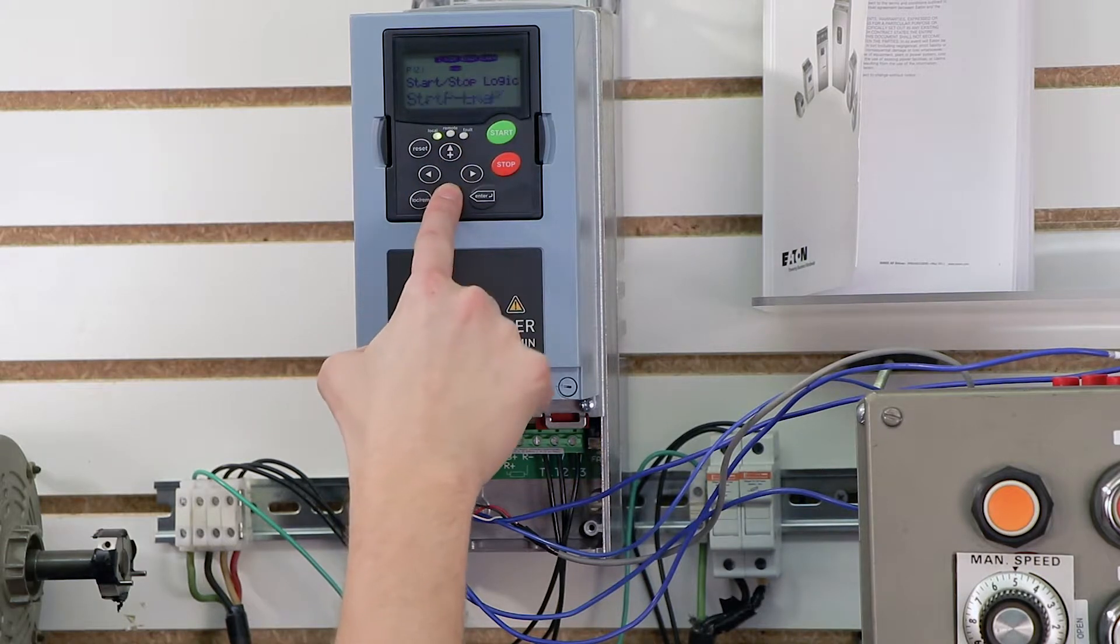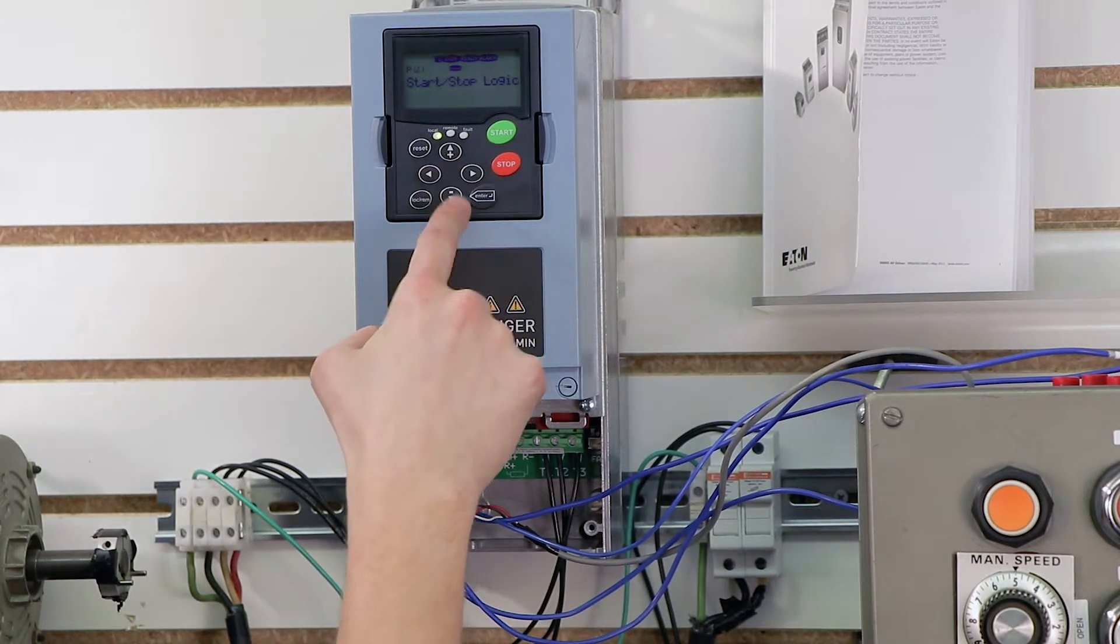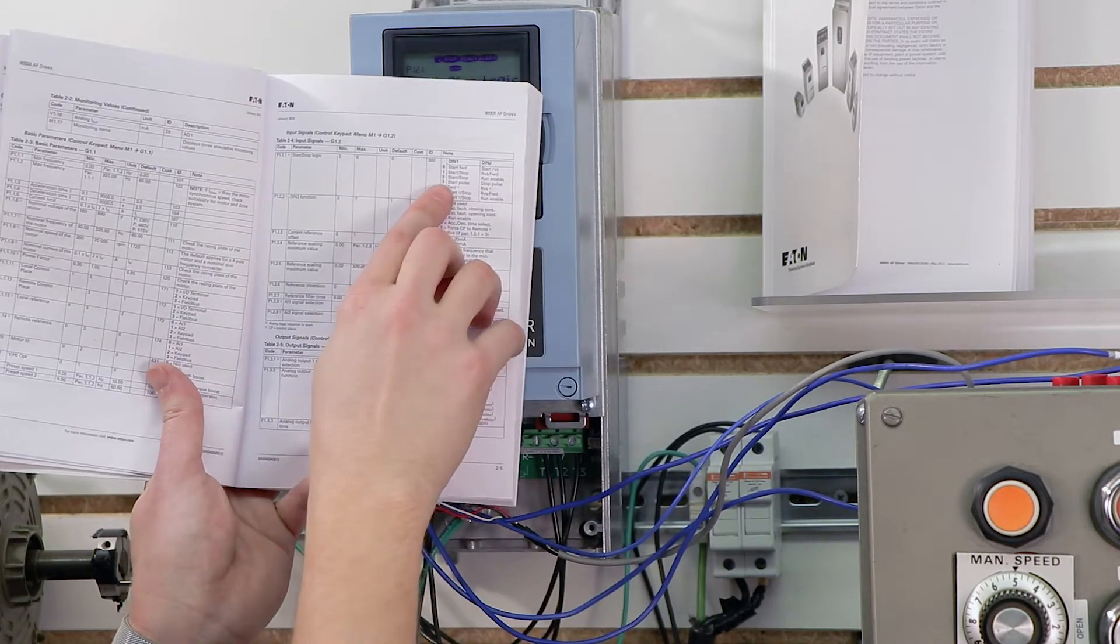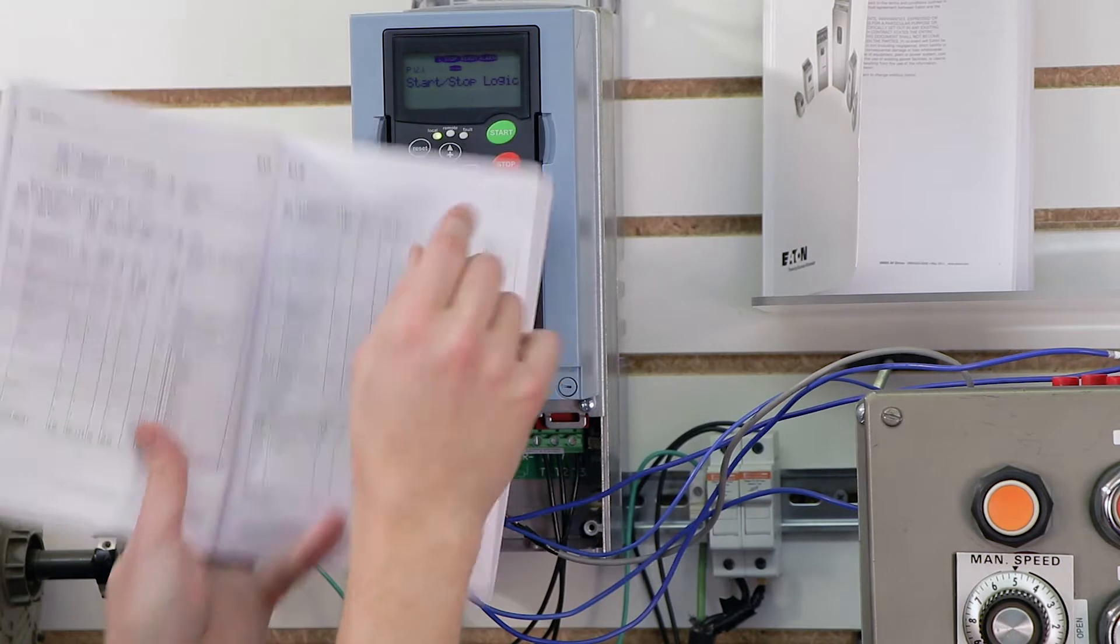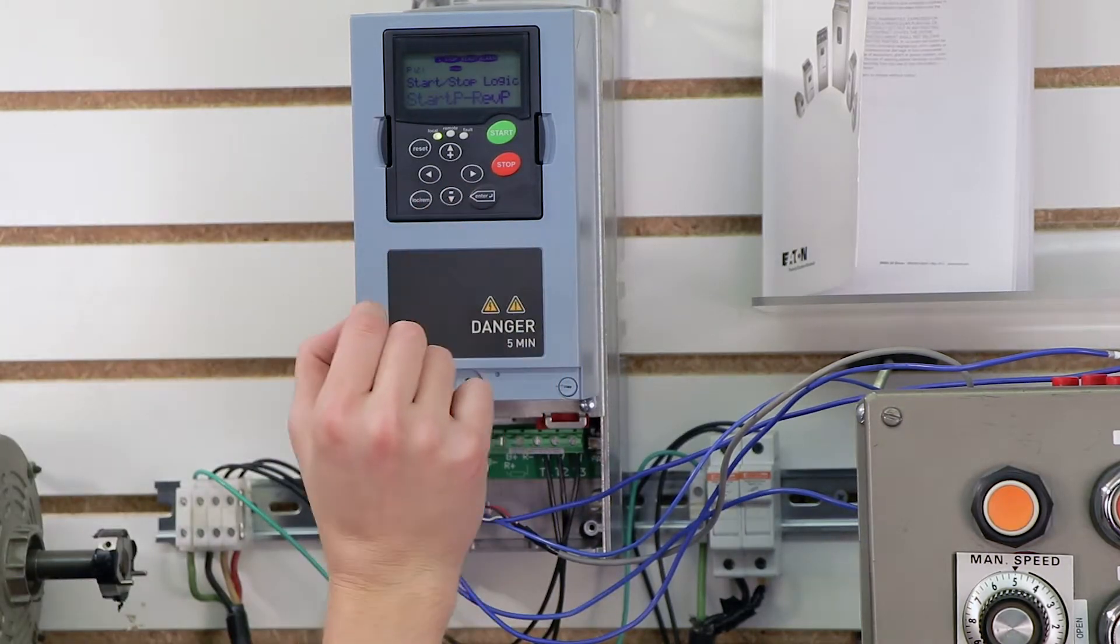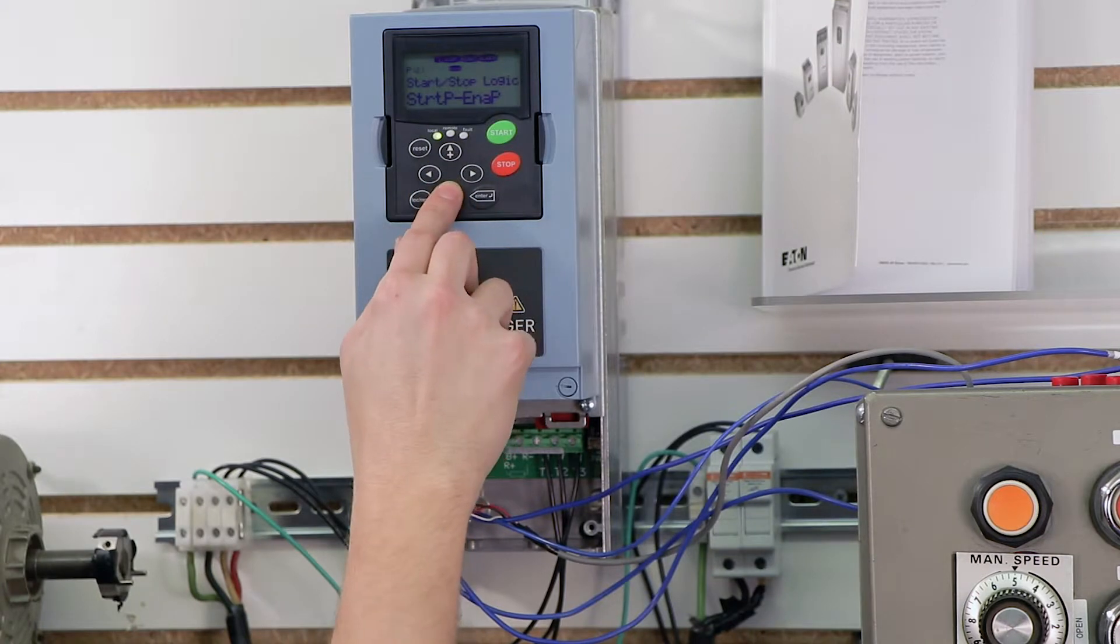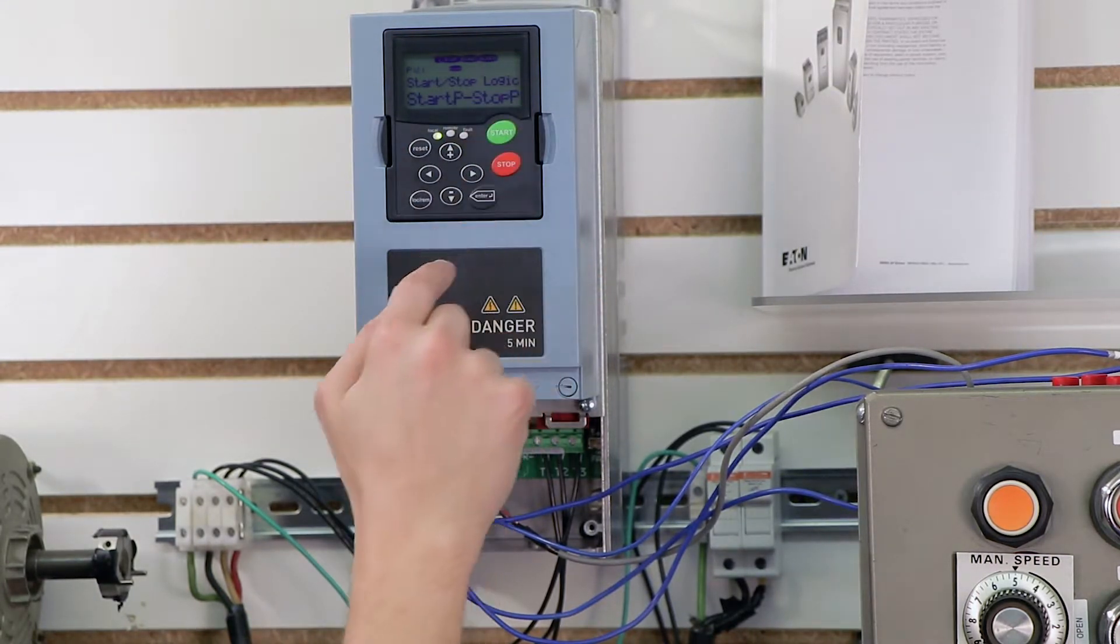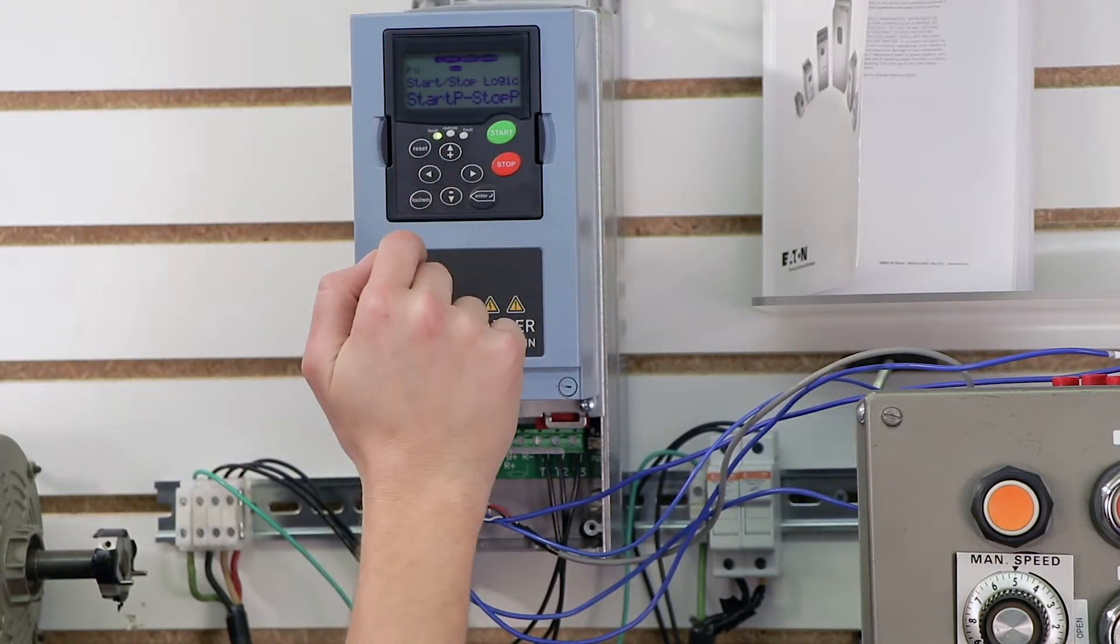By default, it's just standard start and stop, which means you have to have a selector switch, but what we're looking for is on the right here is start, stop, pulse, which means a momentary flow of voltage is what's going to start and stop it. So let me go up through here, start pulse, stop pulse, and I'm going to press enter, and so 1.2.1 is done.